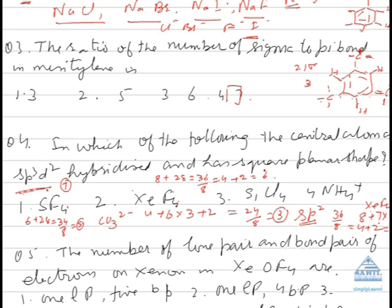Now again he has said square planar. It will be square planar only if it has two lone pairs of electrons.